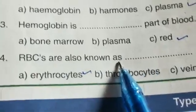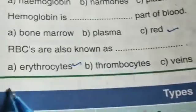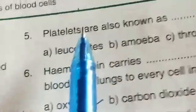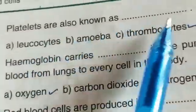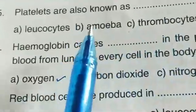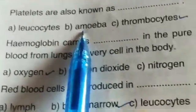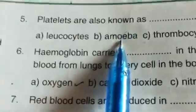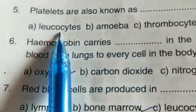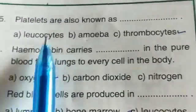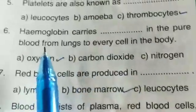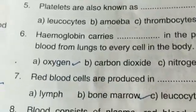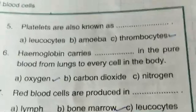RBCs are also known as erythrocytes. Platelets are also known as thrombocytes. We cannot write amoeba because amoeba is a unicellular animal — it is not a part of the human body. Leukocytes are the white blood cells, so you need to know the names and second names of all three blood cells.